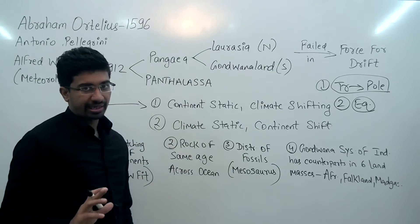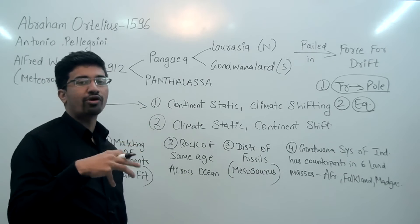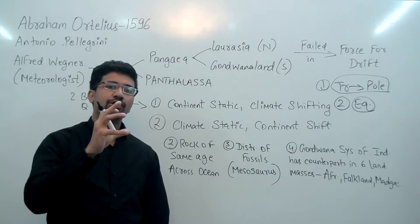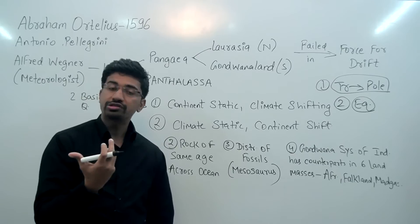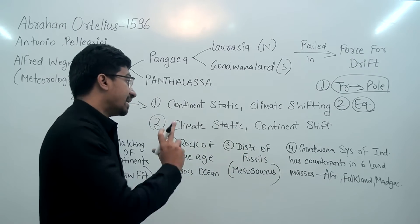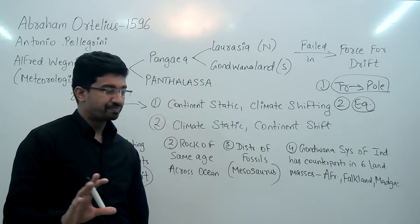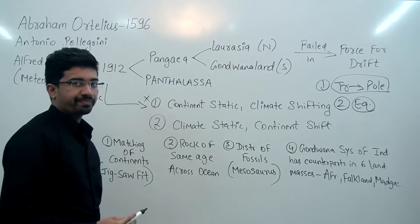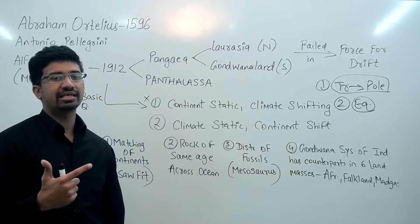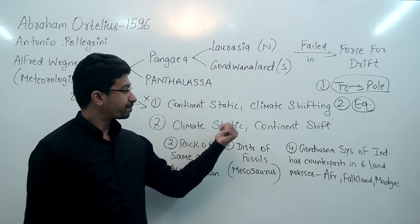There were two possible answers. One: the continents are static, meaning the continents stayed in their positions as they are, but there was a climate shift — meaning the path of the sun changed. Or two: the climate is static, but the continents shifted. Meteorologists who studied this closely concluded that the climate is static and the continents are the ones that shifted.